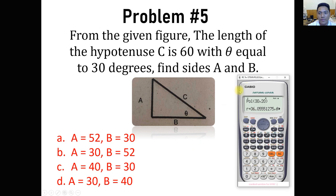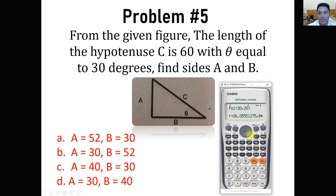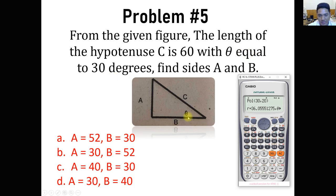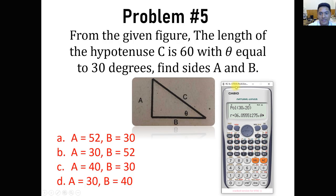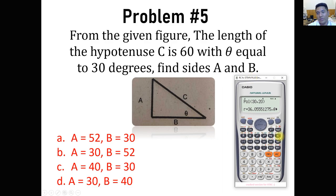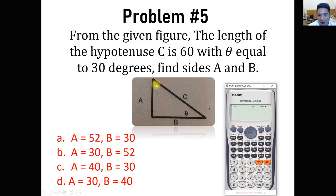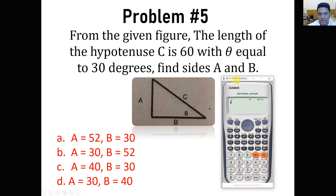Lastly, for problem number 5: from the given figure, the length of hypotenuse C is 60 and the included angle is 30 degrees. Find sides A and B. This is the same figure as problem 4, but now C (the hypotenuse) is given as 60. We are going to reverse the process: since we are given the hypotenuse C equals 60 and the included angle of 30 degrees, we take 60 as R and 30 degrees as the angle, and convert to rectangular to get A and B.